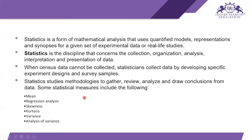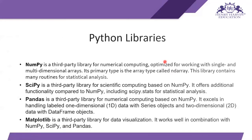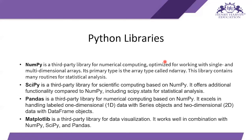Now let's look at Python libraries. NumPy is a third-party library for numerical computing, optimized for working with single and multi-dimensional arrays. Its primary type is the array type called ndarray. This library contains many routines for statistical analysis, so when we have to do mathematical operations in statistics, NumPy arrays are very useful.